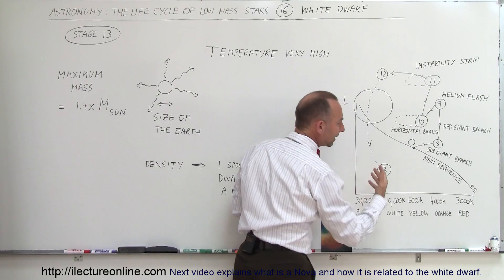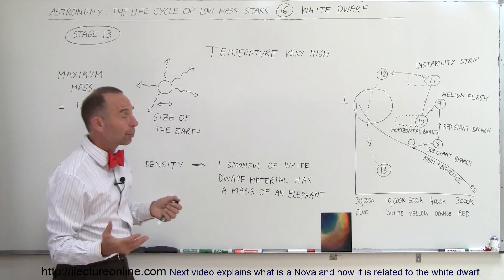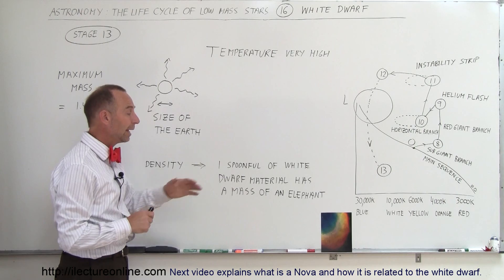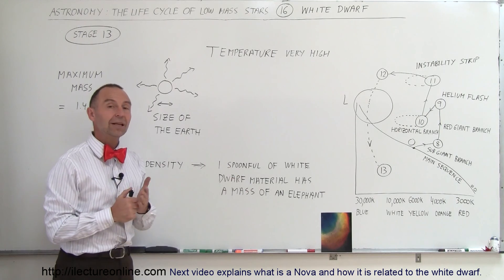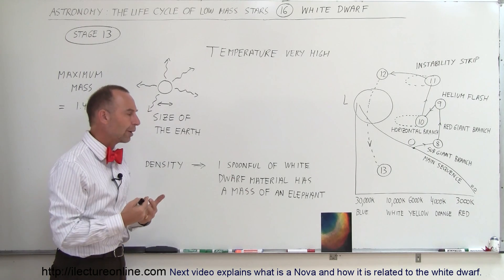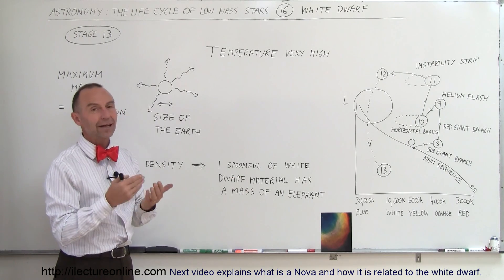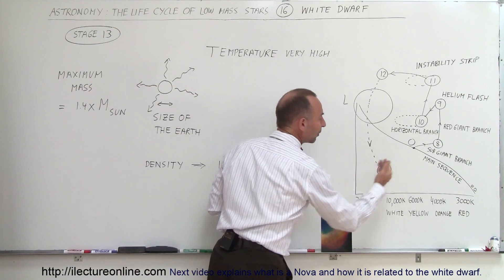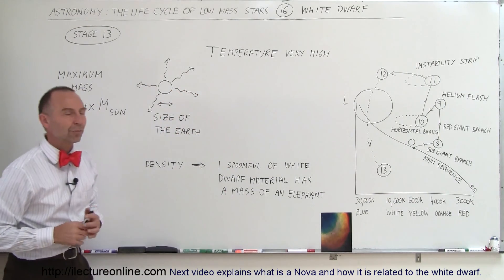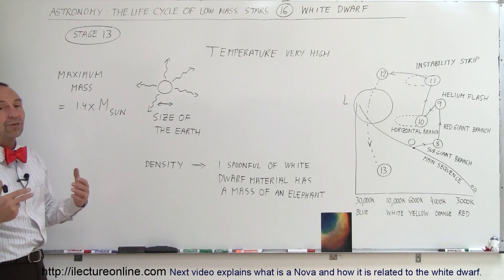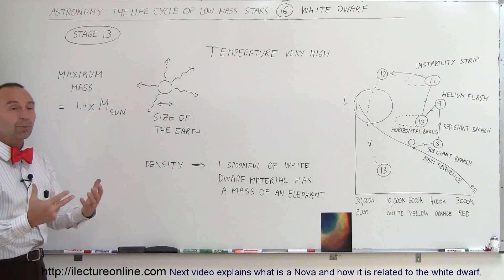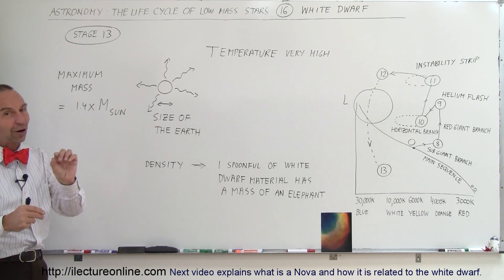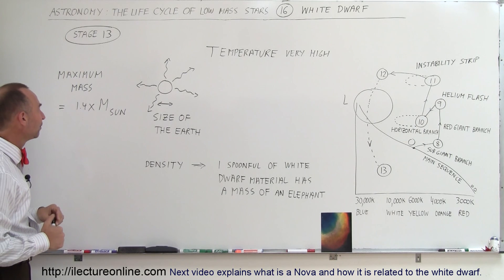In the entire history of the universe — 13.78 billion years — stars have been slowly turning into white dwarfs. None of them have cooled to the point where they're no longer visible, because it takes so many billions of years for them to cool down. So all the white dwarfs that have ever been formed are still visible to us, just hard to find because they're so tiny and small.